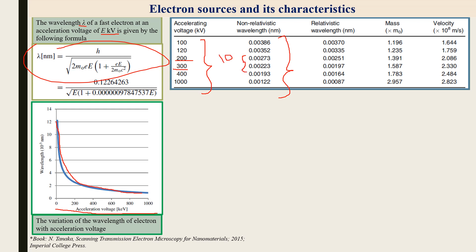Most advanced TEM systems operate at 300 kV or 200 kV. At these voltages the wavelength is in the 10⁻¹² meter range. With this wavelength, the radiation is able to view atomic-scale features. We need to break the wavelength limitation of optical microscopes using the acceleration voltage and wavelength relationship to achieve atomic resolution.